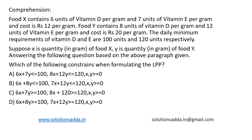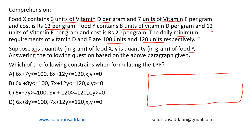This will be a set of five questions in series related to LPP. The first question: Food X contains six units of vitamin D per gram and seven units of vitamin E per gram, and its cost is 12 per gram. Food Y contains eight units of vitamin D per gram and 12 units of vitamin E per gram, and the cost is 20 per gram. Let's draw a table first to understand the given conditions.